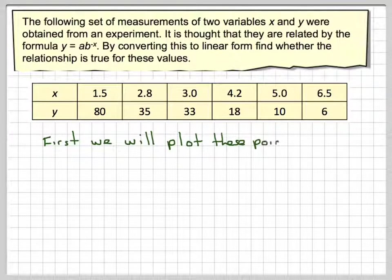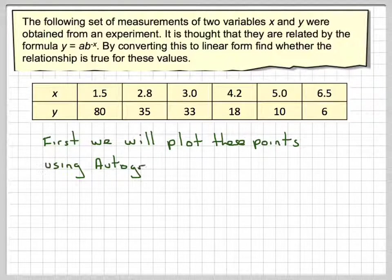First, we will plot these points using Autograph and then we'll use Autograph to come up with the values of a and b. Then I will show you how to do that just by converting it into a linear form.